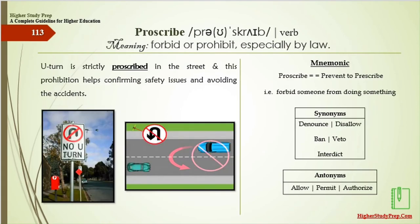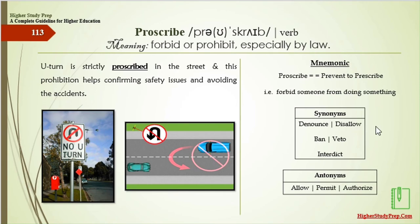Proscribe means to forbid or prohibit, especially by law. A U-turn is strictly proscribed in the street, and this prohibition helps confirm safety and avoid accidents. Mnemonic: proscribe — to prevent, to forbid someone from doing something. The synonyms are denounce, disallow, ban, veto, or interdict. The antonyms for proscribe are allow, permit, or authorize.